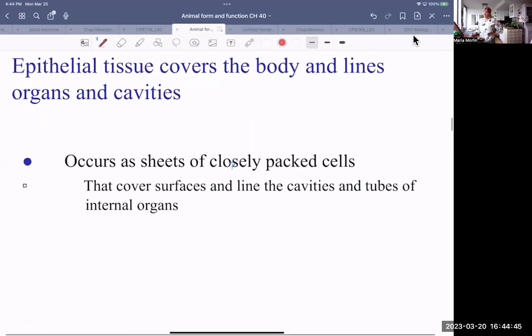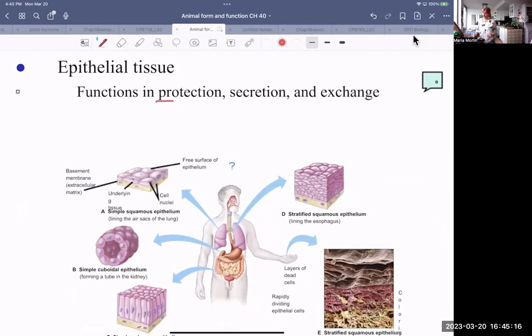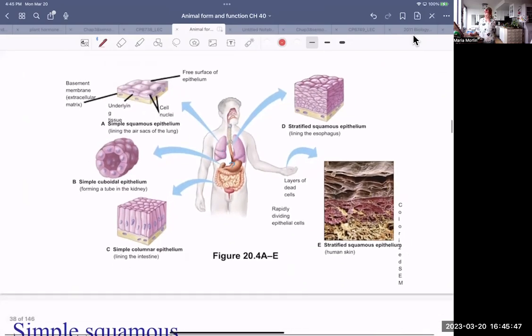So epithelial tissue covers the body and aligns organs and cavities. It's very specific in its shape and its structure. Sheets of closely packed cells. They cover surfaces and they align cavities and they align tubes. They're not always a single sheet of cells, sometimes they're stratified. The functions of epithelial tissue include things like protection, so your skin protects you against pathogens and secretion. Cells that line ducts, such as mammary gland ducts, secrete the products of milk in that case, and exchange. So blood vessels are lined with epithelial tissue that exchanges gases with the surrounding tissue.